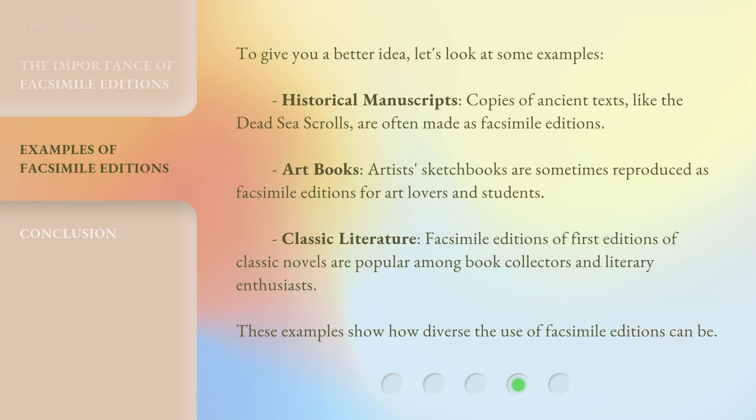To give you a better idea, let's look at some examples. Historical manuscripts: copies of ancient texts, like the Dead Sea Scrolls, are often made as facsimile editions. Art books: artists' sketchbooks are sometimes reproduced as facsimile editions for art lovers and students. Classic literature: facsimile editions of first editions of classic novels are popular among book collectors and literary enthusiasts. These examples show how diverse the use of facsimile editions can be.